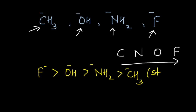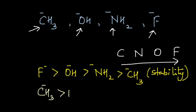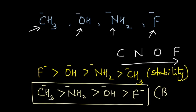This is the order of stability. Since a stable species is less reactive, the order of basicity will be the opposite: CH3⁻ is more basic than NH2⁻, which is more basic than OH⁻, which is more basic than F⁻. That simple it is to decide the order of basicity if you know the atom on which the negative charge is present.